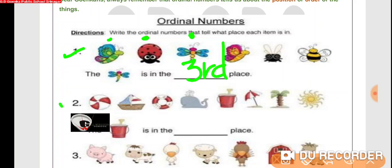Now look at part 2. The bucket is in the dash place. Let us find the position of the bucket in the given series. It is 1st, 2nd, 3rd, 4th, 5th. The bucket is in the 5th place, so we will write 5th.